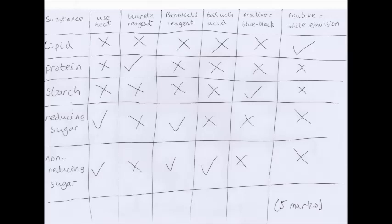You get one mark for getting each complete row correct — so one mark for knowing each test, which is a bit unfair. When I did this question, I actually got 88% of the ticks and crosses right — three wrong out of 24. But I only got two out of four marks, because the three I got wrong were in two of the tests. Unfair, but that's how it is.